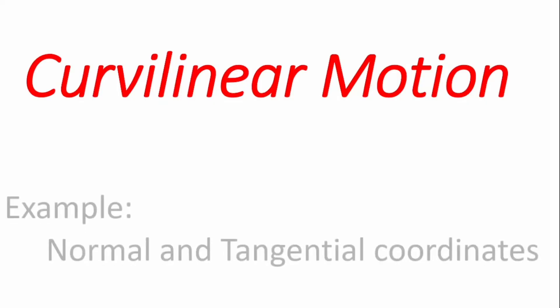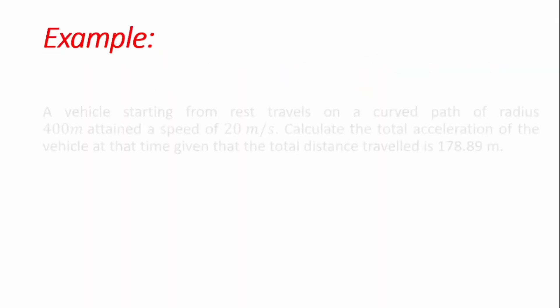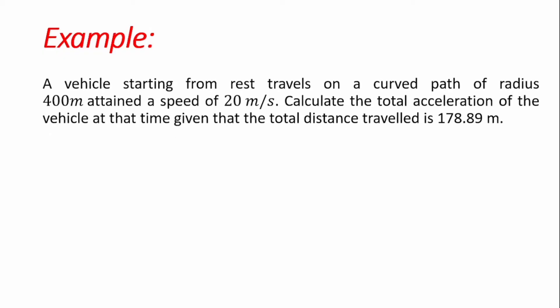Welcome to the Area Solutions channel. In this video we're looking at an example that covers normal and tangential coordinates for curvilinear motion. We'll walk through an example in which a vehicle starting from rest travels on a curved path of radius 400 meters and attains a speed of 20 meters per second. We are to calculate the total acceleration of the vehicle at that time, given that the total distance traveled along the curve path is 178.89 meters.